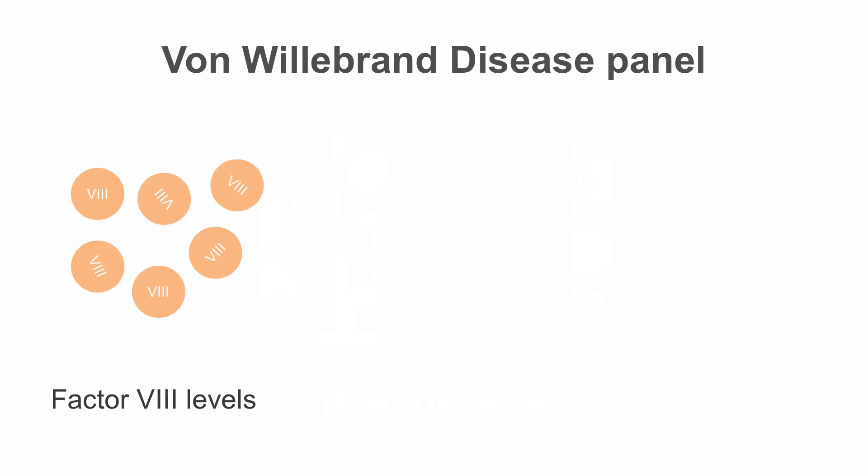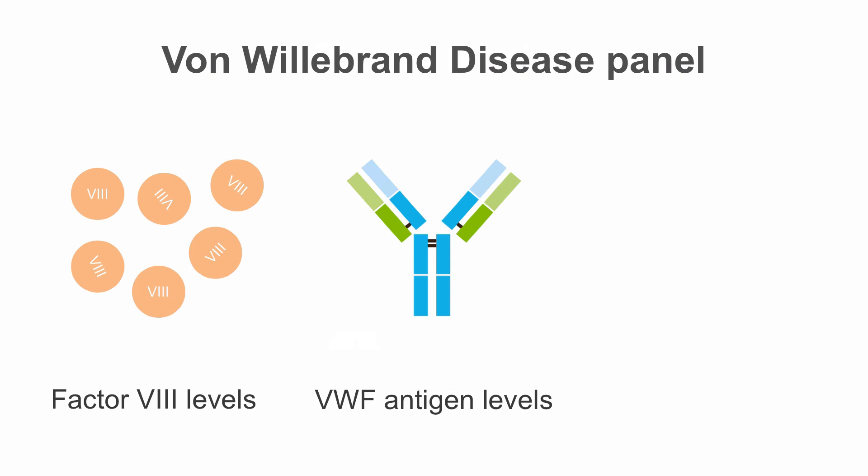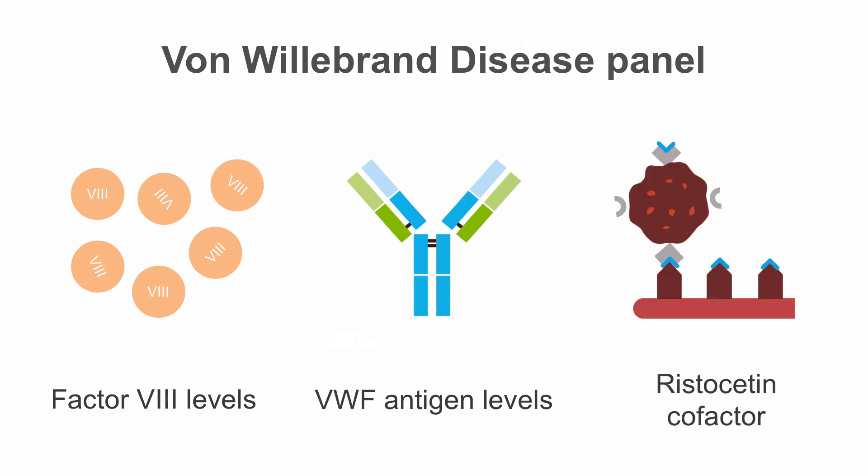There is a test called the von Willebrand's disease panel, which consists of three tests. The first is measuring factor 8 levels. The second is measuring von Willebrand's factor antigen levels. The third is measuring von Willebrand's factor functional activity, also known as ristocetin cofactor activity.